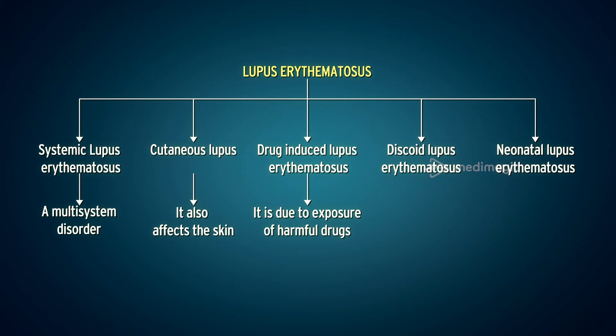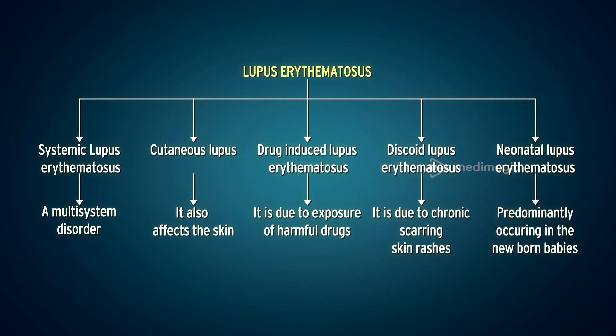Discoid lupus erythematosus is a long-term skin disorder involving sores with inflammation and scars covering the face, ears and scalp, and at times on several body parts. These lesions develop as a red inflamed patch with a scaling and crusty appearance. Neonatal lupus erythematosus is a clinical disorder of cutaneous, cardiac and systemic abnormalities observed in newborn infants, diagnosed due to inheritance of lupus susceptibility from their mother.